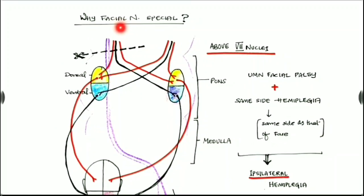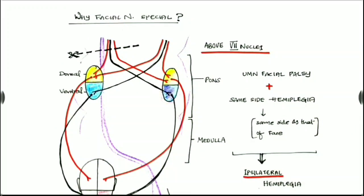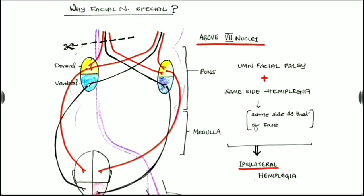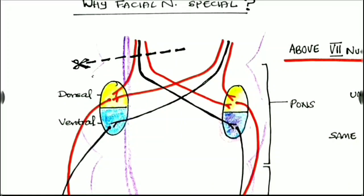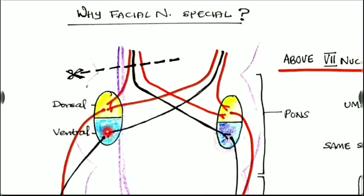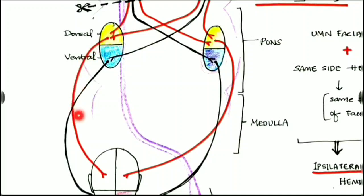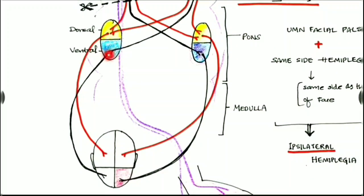Why is the facial nuclei so special? All other cranial nerves have bilateral innervation from both sides of the brain, so a lesion on one side is compensated by the other side. But in the facial nuclei there are two halves — the dorsal part and the ventral part. The dorsal upper part has innervation from both halves of the brain, whereas the ventral part has innervation from only one half of the brain, and that even from the opposite side. The dorsal part innervates the upper two-thirds of the face, whereas the lower ventral part innervates the lower one-third of the face.